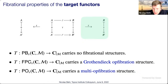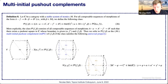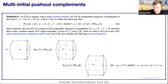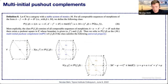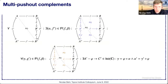Multi-initial pushout complements are precisely instances of multi-op fibrations: given two arrows f followed by one of the stable monics, you define a family of pushout squares fitting into this sequence. This is a multi-initial pushout complement if for any larger pushout square of which f and its partner are a sub-diagram, you can uniquely fill this with two pushout squares, one of which is a member of the family in an essentially unique way.